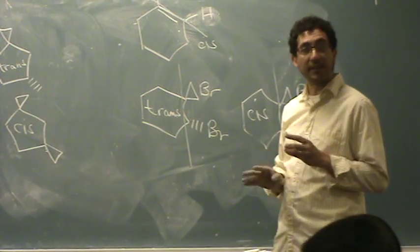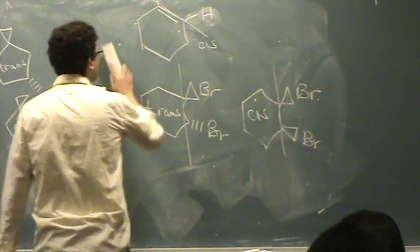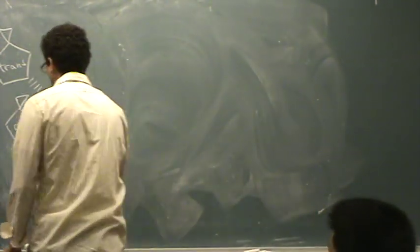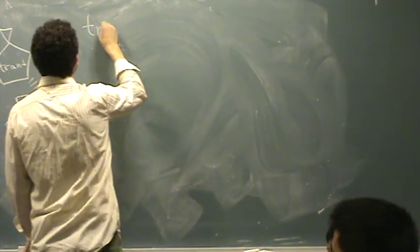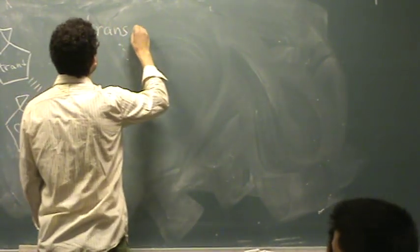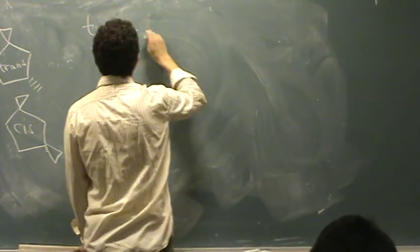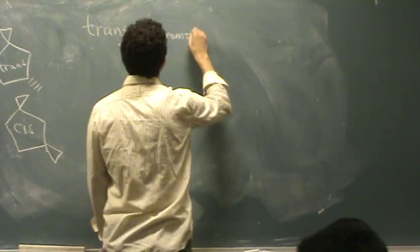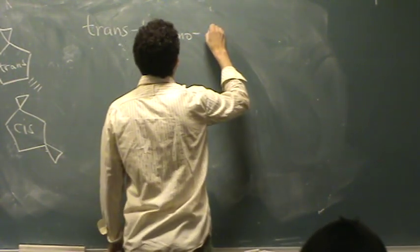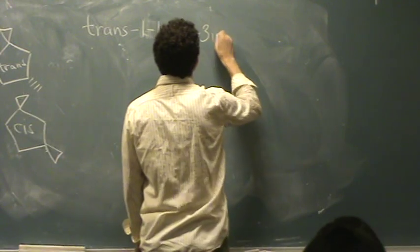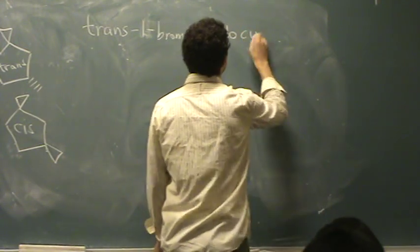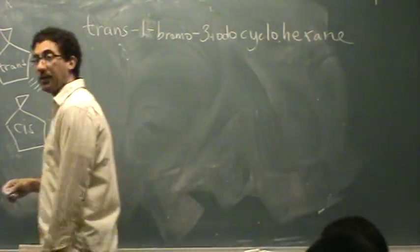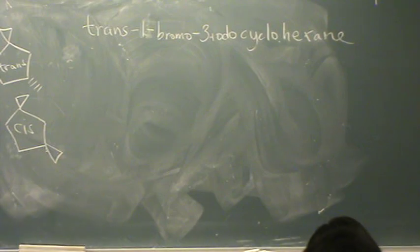So that's identification. You could also... I could also just give you a molecule and you'd have to draw it out. So trans, one, bromo, three, iodo, cyclohexane. So I give you a molecule. I want you to draw the trans version.